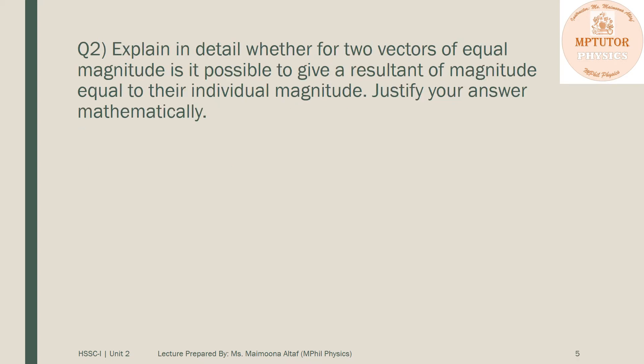Question number two is: explain in detail whether for two vectors of equal magnitude is it possible to give a resultant of magnitude equal to their individual magnitude. Justify your answer mathematically.